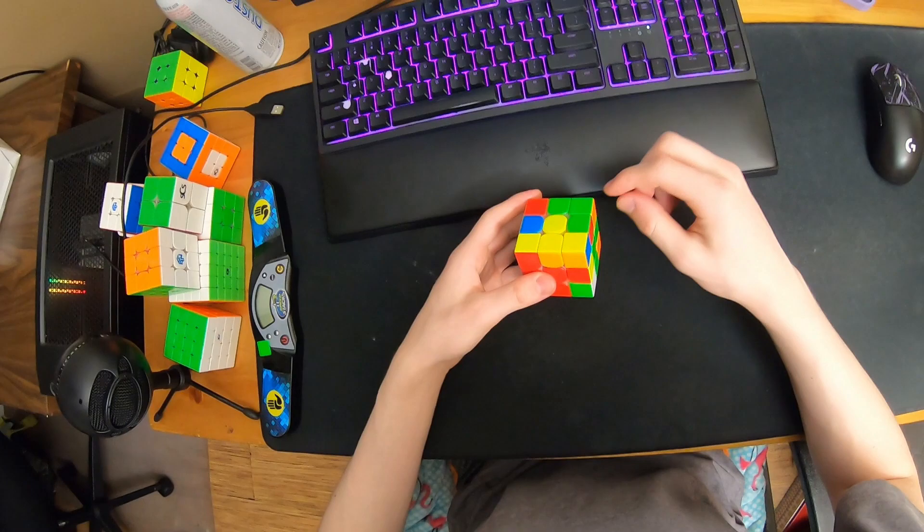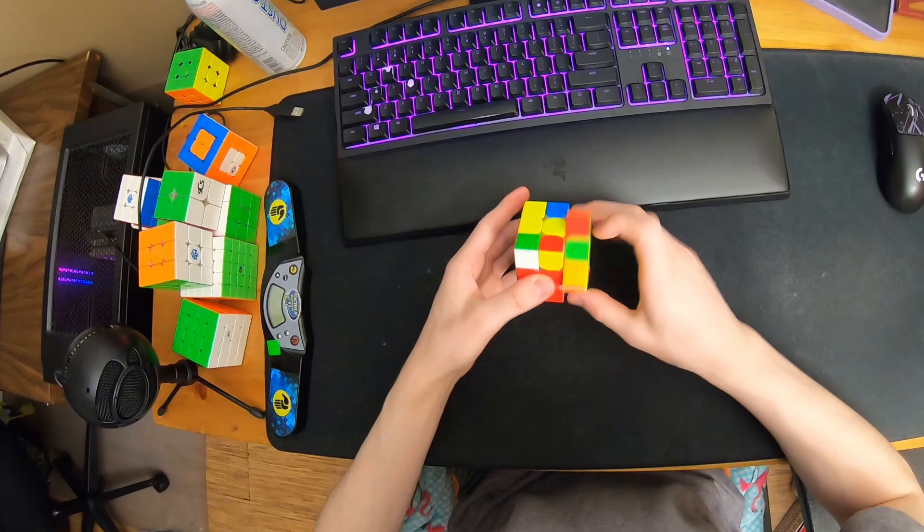I saw that this corner would be here and I also saw that this edge would be here. To pseudo-slot I have to solve this corner. You do that with double sexy move, but if I do that this is stuck in here and this is here so it's a really bad pair.